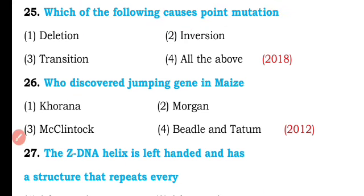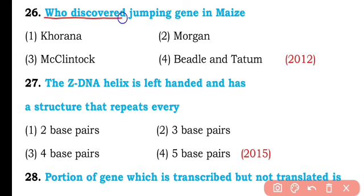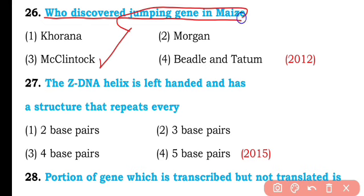Question number twenty-six. Who discovered the jumping genes in maize? Khurana, Morgan, McClintock, or Beedle and Tatum? So the correct answer is option three — Barbara McClintock discovered the jumping genes in the maize plant.